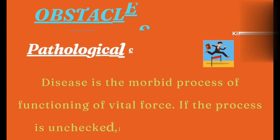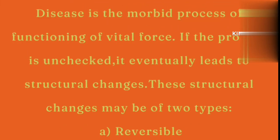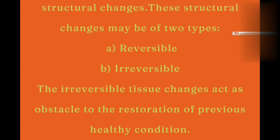The third obstacle is pathological cause. If there is a disease, it will involve morbid functioning of the vital force. If the process is unchecked, the tissue will undergo structural changes. These structural changes in tissue can be of two types: reversible — in which case the patient will recover — or irreversible — in which the structure of the tissue will never change back. So if there are irreversible tissue changes, even the best medicine will not be effective. This is why irreversible pathological changes act as an obstacle to cure.